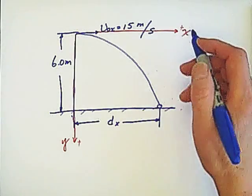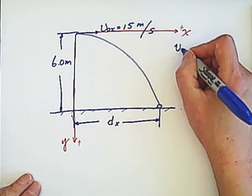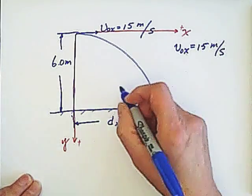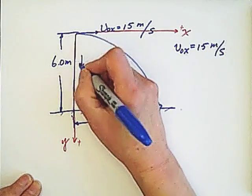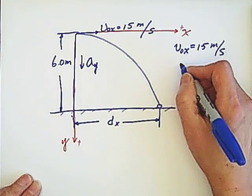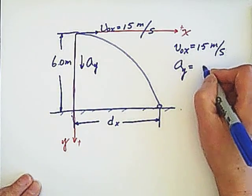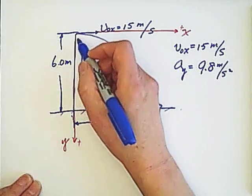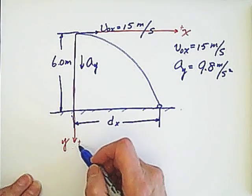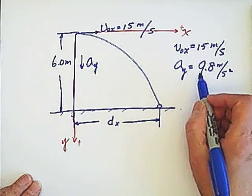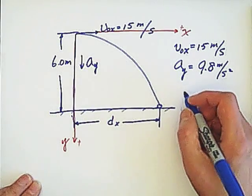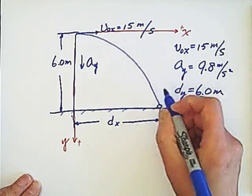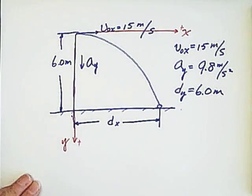The given information is initial velocity and also we know on the vertical we have acceleration, which is 9.8 meter per second squared. Because we set the downward as positive, that's why the acceleration 9.8 is positive. And the dy is positive. And the dy equals 6 meters, also positive.